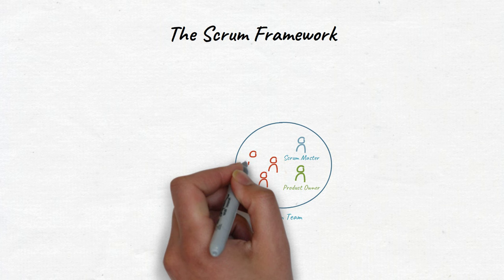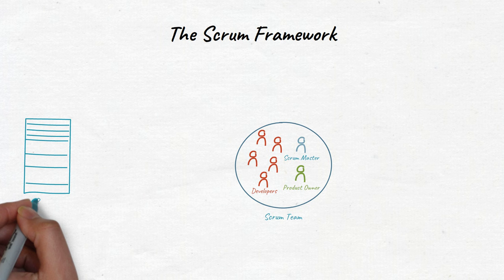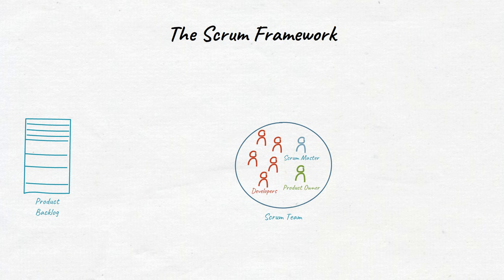We start with an artifact called the product backlog, which is an emergent ordered list of what is needed to improve the product. It is the single source of work undertaken by the Scrum team.